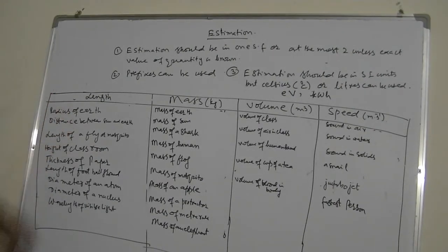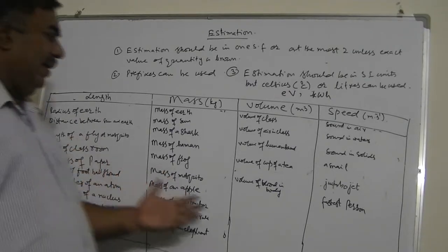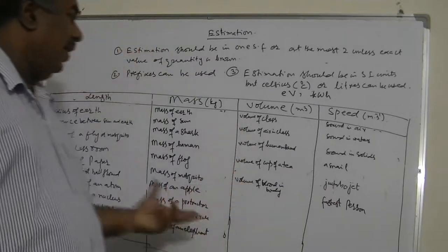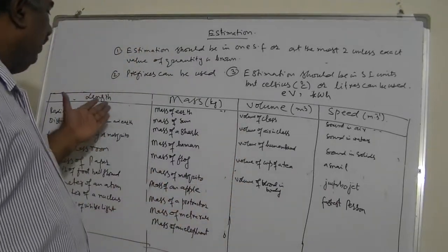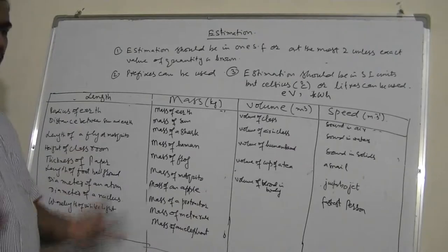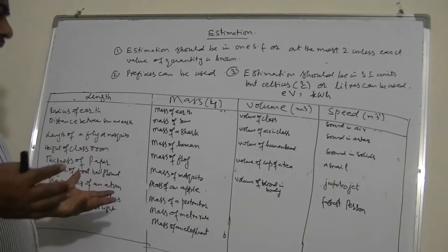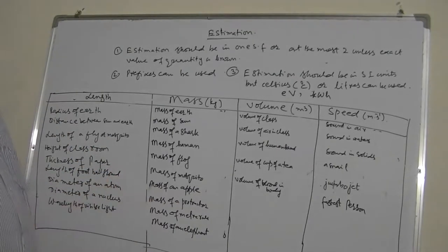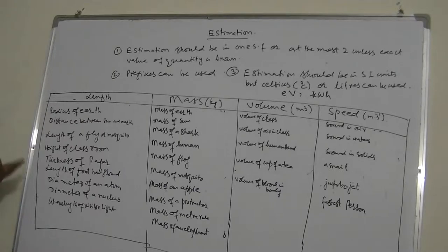I have written a few example quantities here because there isn't time to cover everything. I've listed length, mass, volume, and speed, but examples can go beyond these. The examiner can ask about frequency or any other physical quantity — whether it is explicitly on the syllabus or not — as long as it is from everyday life.